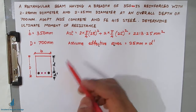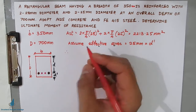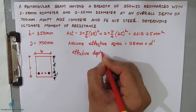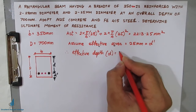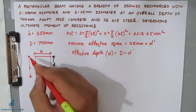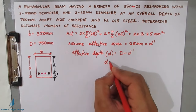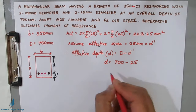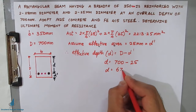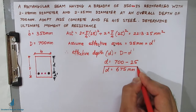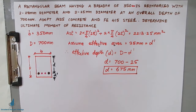We assume effective cover d' = 25 mm. Therefore, effective depth d = D − d' = 700 − 25 = 675 mm. The effective depth is the distance from the top fiber to the centroid of the tension reinforcement.